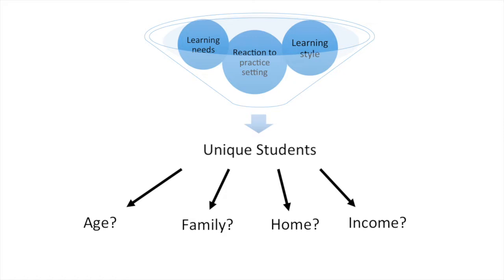Emerging adults that choose to attend college or university are continuing to explore their identity, and begin to shift the worldview of their family of origin to one that has been personally constructed through their own life experiences. However, some students may be more established with life experiences, including children, homes, mortgages, and other competing demands.